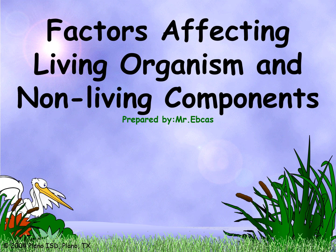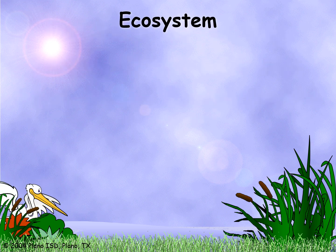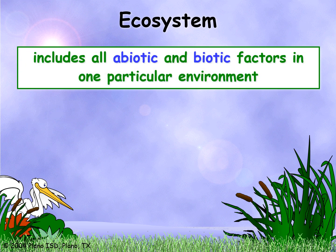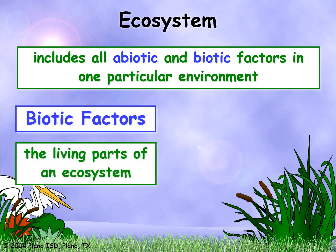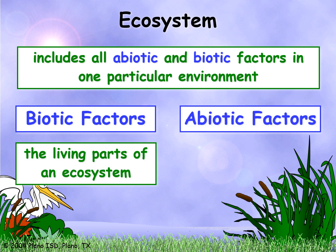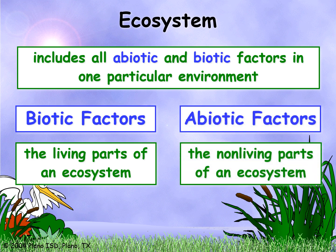Factors affecting living organisms and non-living components. An ecosystem includes all biotic and abiotic factors in one particular environment. Biotic factors are the living parts of an ecosystem, and abiotic factors are the non-living parts of an ecosystem.